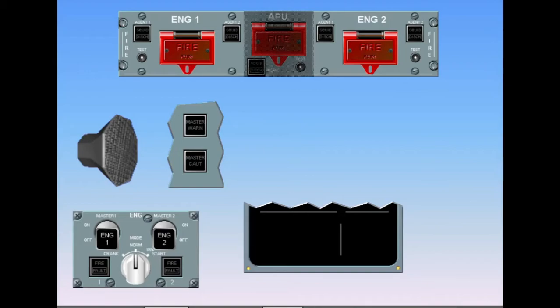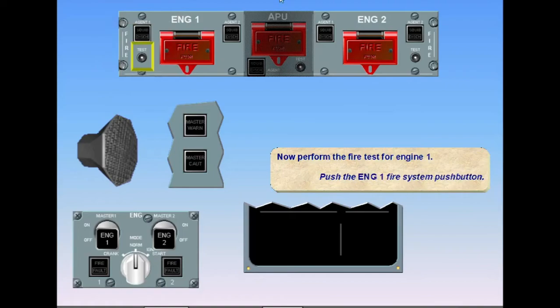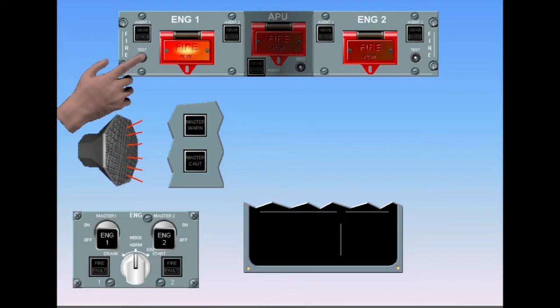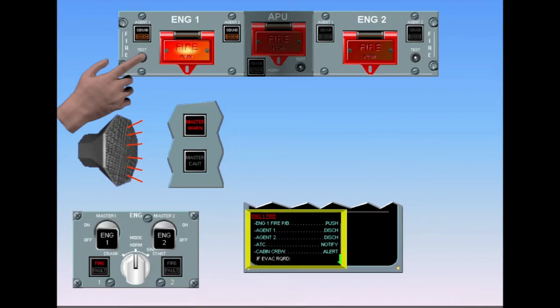Now, perform the fire test for Engine 1. Push the Engine 1 Fire System Push Button. Observe: the engine 1 Fire Push Button Switch illuminates red, squib and discharge lights come on, the master warning light illuminates red, the CRC sounds, the engine 1 Fire Warning on the ECAM appears, and the fire light on the engine panel illuminates.